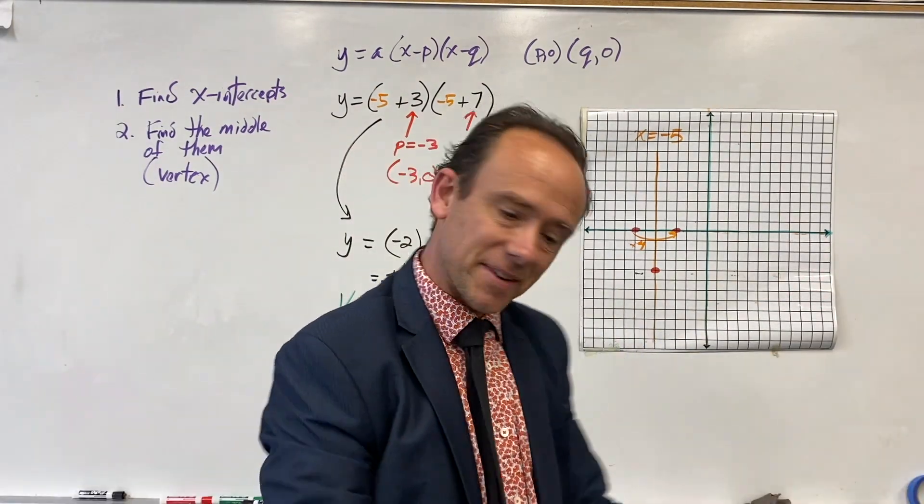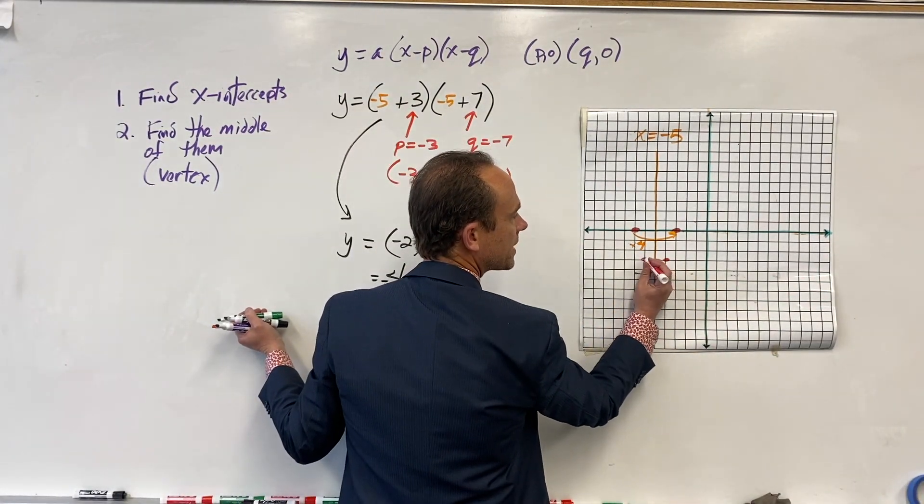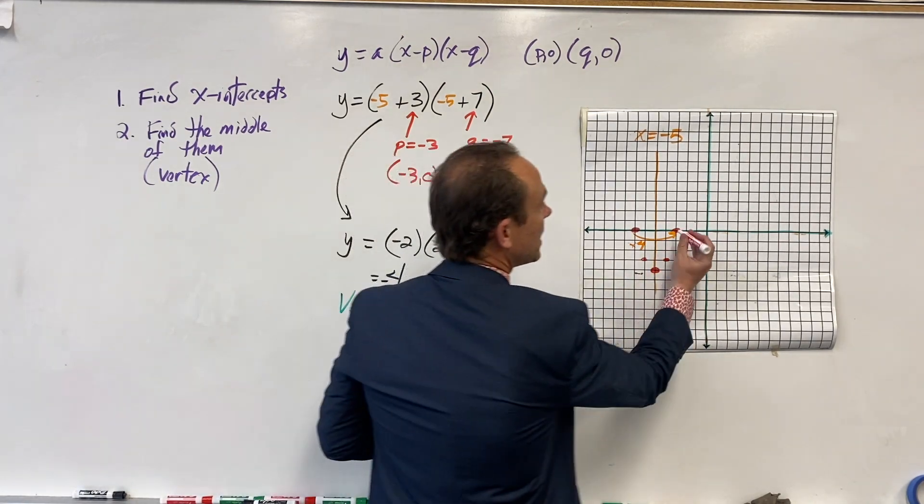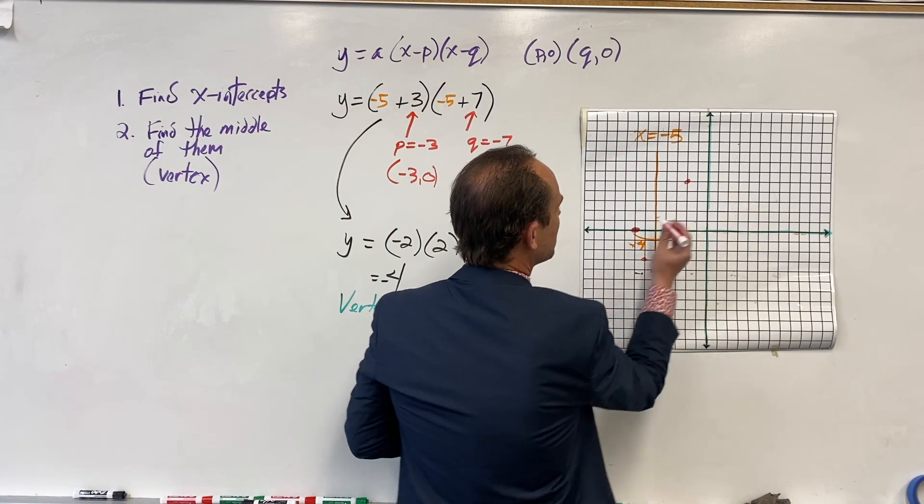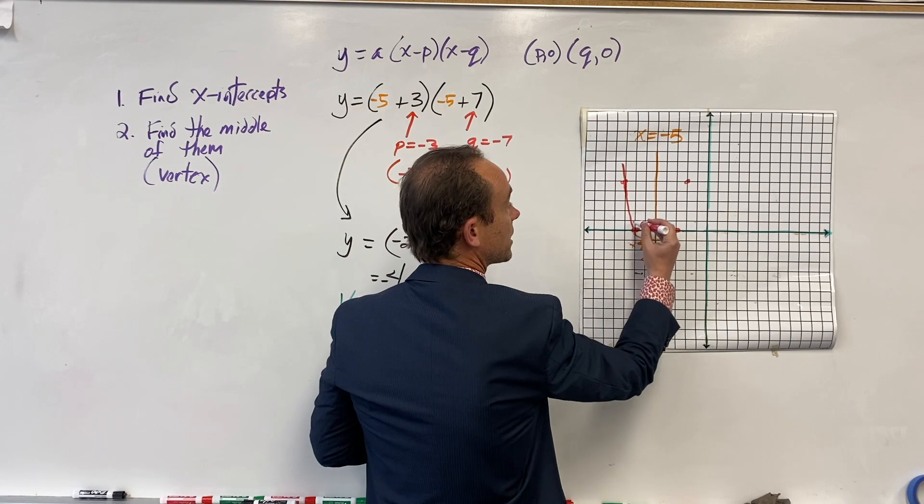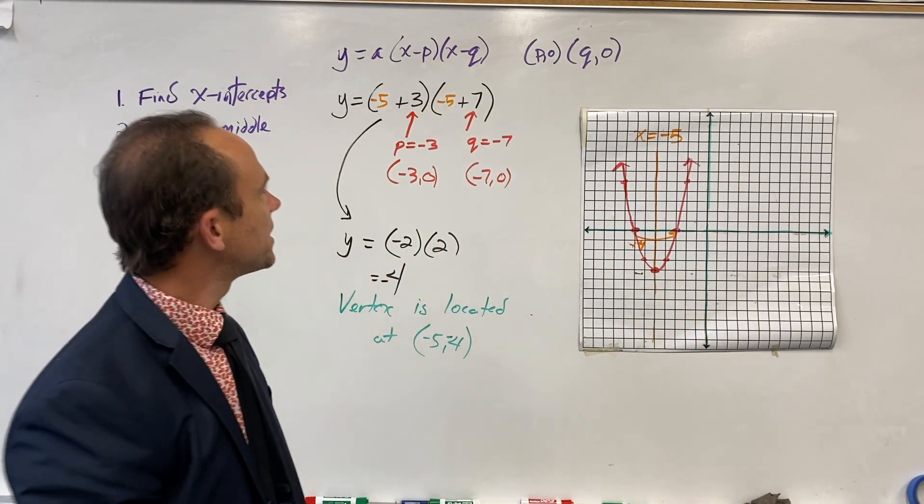Let's follow that pattern. I'm going to go over 1 up 1 and reflect that, over 1 up 3, got my x-intercept, and maybe over 1 up 5 just to really make a nice parabola. Do your best to draw it, it is a beautiful shape. And there we go, wonderful.